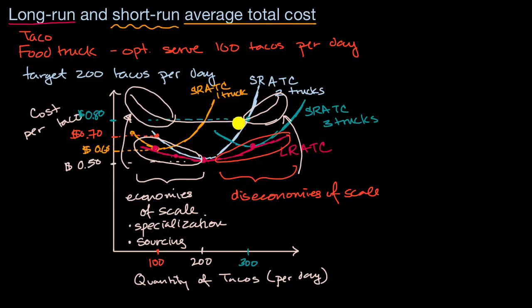But this section over here, where it is constant, you might guess what that is called. That is called constant economies of scale, or constant returns to scale, sometimes known as efficient scale.